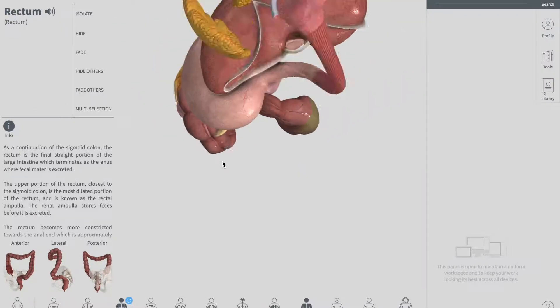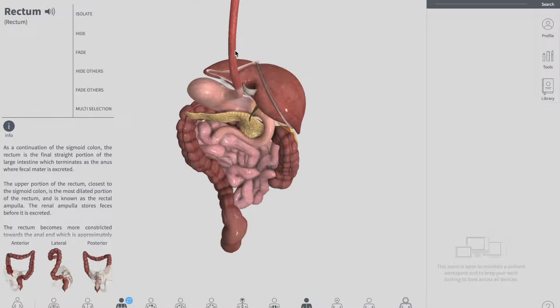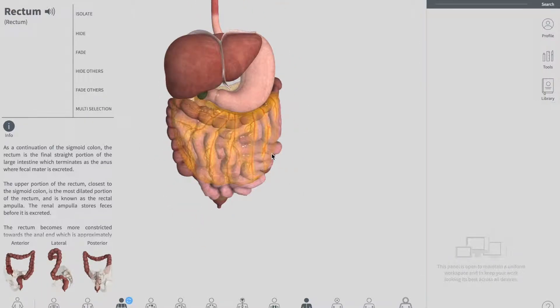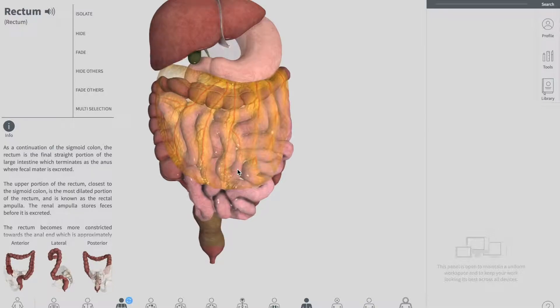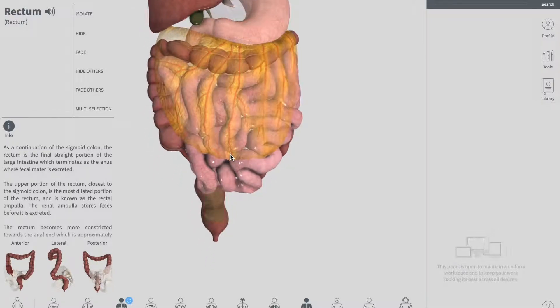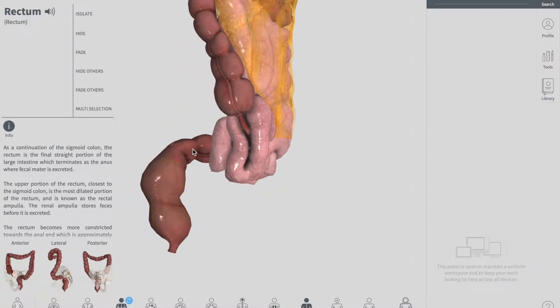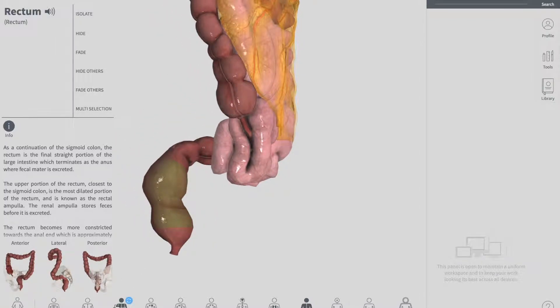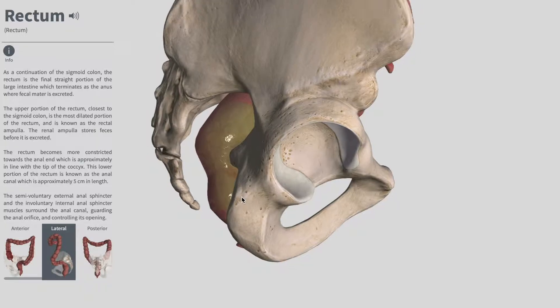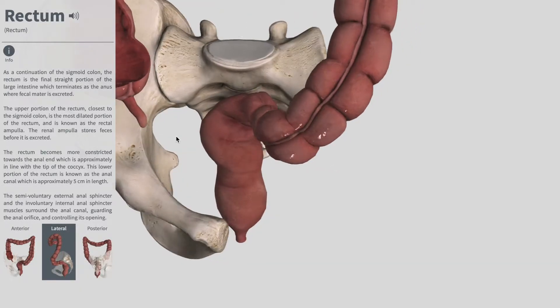There you go, right down there you can see that. And it follows the curve of your sacrum and coccyx bone. You can see right down there it follows the curve of your coccyx and your sacrum bone.